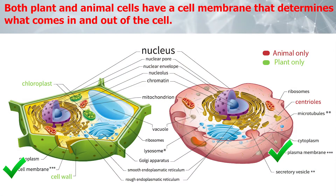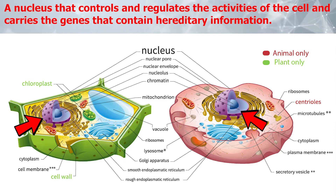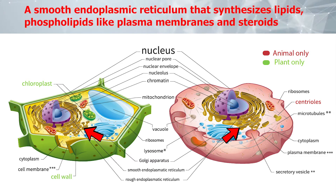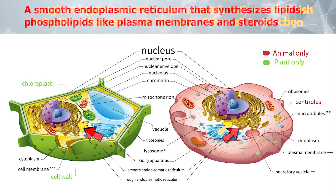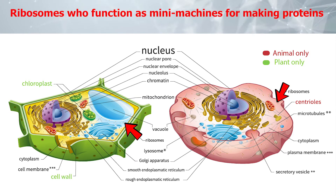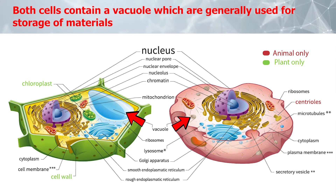Let's take a look at the following diagram to see what plant and animal cells have in common. Both plant and animal cells have a cell membrane that determines what comes in and out of the cell; a nucleus that controls and regulates the activities of the cell and carries the genes that contain hereditary information; a nucleolus whose primary function is to produce and assemble the cell's ribosomes and make ribosomal RNA; a smooth endoplasmic reticulum that synthesizes lipids, phospholipids as in the plasma membrane, and steroids; a rough endoplasmic reticulum whose function is to finish production of proteins for the rest of the cell to function; ribosomes, which function as a mini-machine for making proteins. Both cells also contain a vacuole, which is generally used for storage of materials.